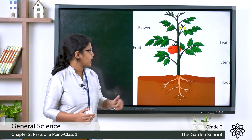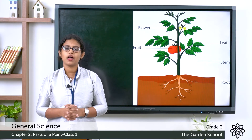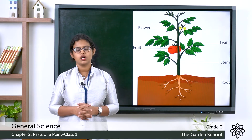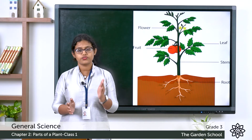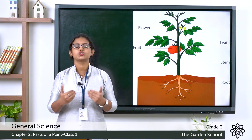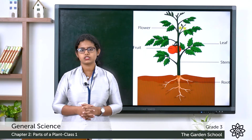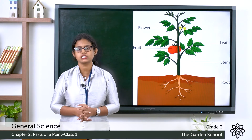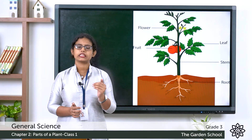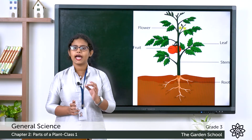The first three parts — the root, stem, and leaf — help the plant to get water, to grow, and to make food. The next three parts — the flower, the fruit, and the seed — help the plant to grow into a new plant. Today we are going to discuss about the first two parts of the plant: the root and the stem.